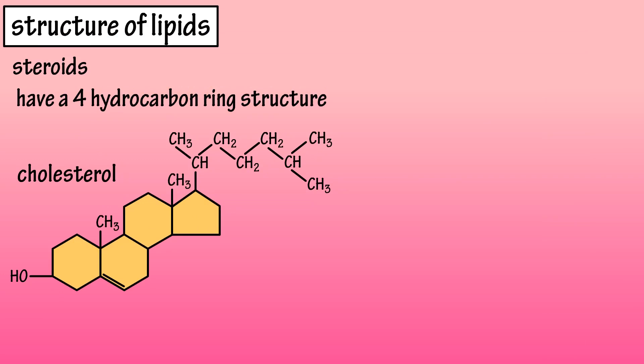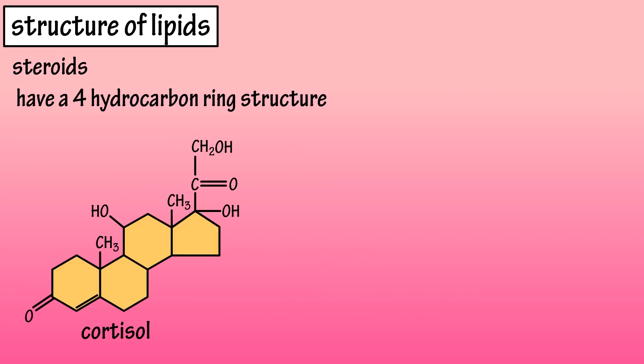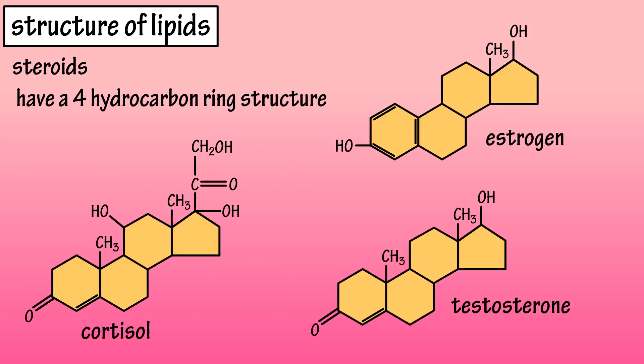Cholesterol is also an important building block in bile acids, which are key in breaking down fat molecules in the body, and many hormones, which are signaling molecules the body releases. Cortisol, estrogen, and testosterone are also other important steroid compounds. You can see that each of these molecules differ slightly based on their side chain formation, but they all have the 4 hydrocarbon rings as the foundations of their molecules.